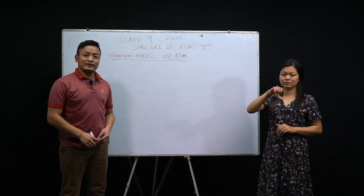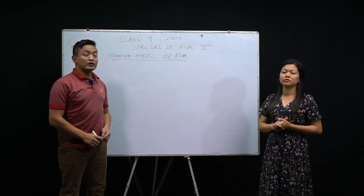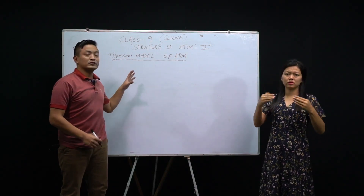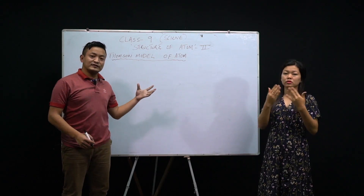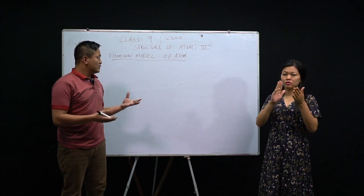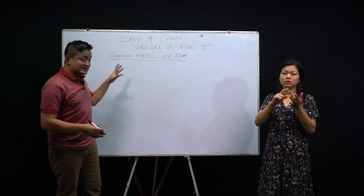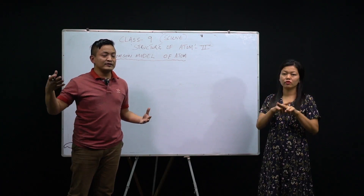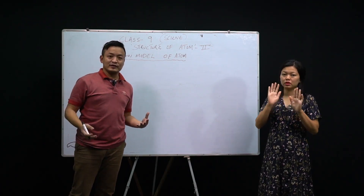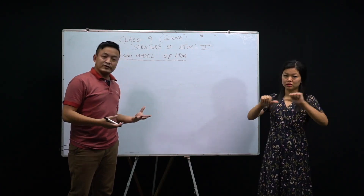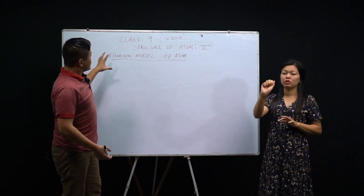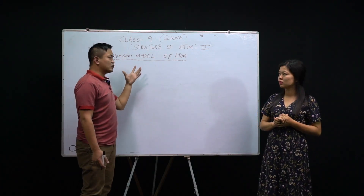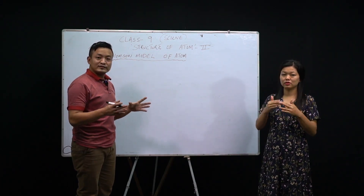Hello, dear Class 9 students, welcome back. We'll continue with the second part of the Structure of Atom. Yesterday I gave a brief introduction about the Thomson model of an atom. Thomson is one of the scientists who first gave the model of an atom, but there were drawbacks, and then many other scientists came and gave their own models.